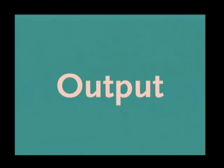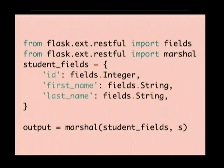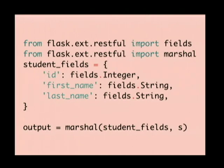Moving on to output features — the framework provides us with a function called marshal, which can extract the data from almost any Python data structure: objects, dictionaries, basically anything that has get or getattr. And it'll transform it into any structure we like. Similar to our input approach, we import the fields module and the marshal function, and then we create a mapping from what we want the output field names to be in the serialized response to the type they should be. The fields module comes with ints, strings, floats, URLs, datetimes, and a whole bunch more. You can also write custom ones. Once we've done this, we use the marshal function to take an object — maybe a SQLAlchemy database object — hand it to marshal with this mapping, and it'll produce a dictionary using just the formatted data extracted from the domain object with the right formatter applied.